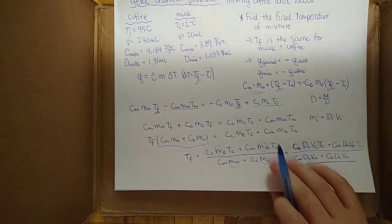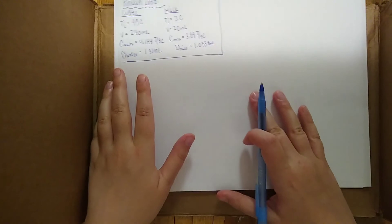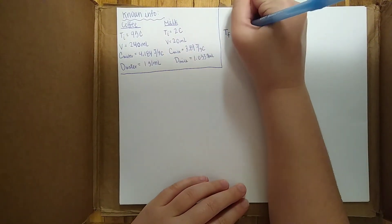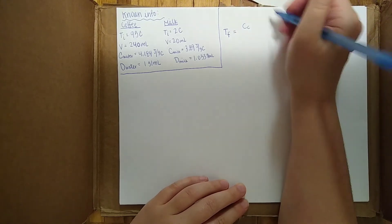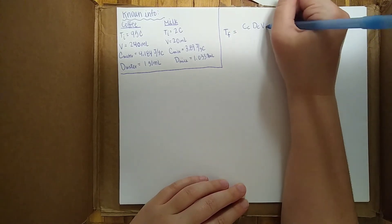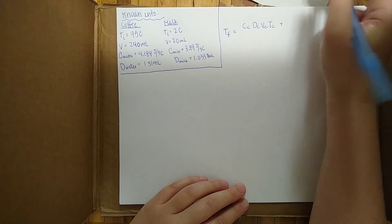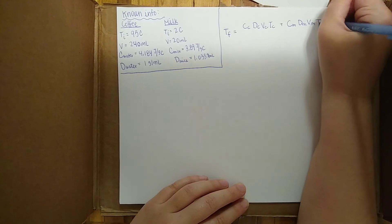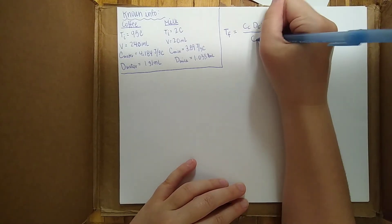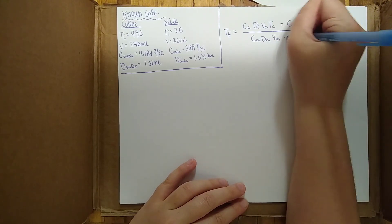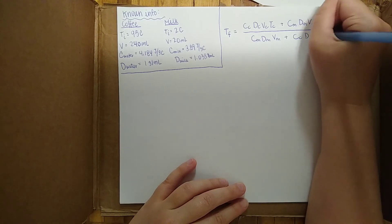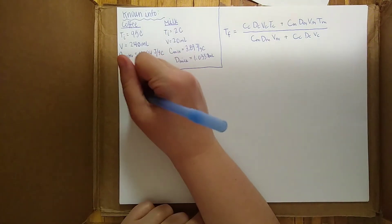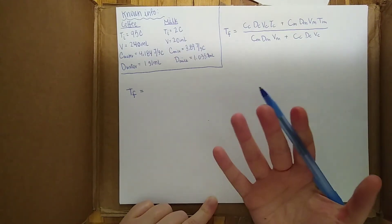Now let's move on to evaluating. Here's all our known information, and I'm going to write down our derived expression. The final temperature equals: the specific heat of the coffee times the density of the coffee times the volume of the coffee times the temperature of the coffee, plus the specific heat of the milk times the density of the milk times the volume of the milk times the temperature of the milk — all divided by the specific heat of the milk times density of milk times volume of milk, plus specific heat of coffee times density of coffee times volume of coffee.